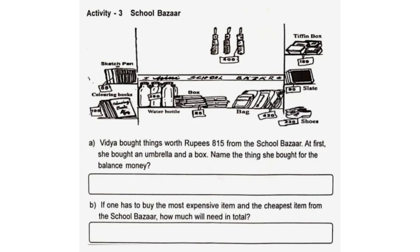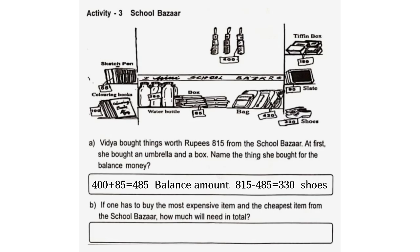Activity 3 - School Bazaar. A. Vidya bought things worth Rs. 815 from the school bazaar. At first, she bought an umbrella and a box. Name the things she bought for the balance money. 400 plus 85 is equal to 485. Balance amount: 815 minus 485 is equal to 330. So she bought shoes.